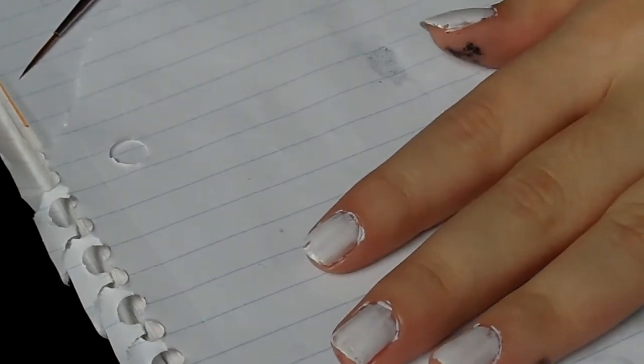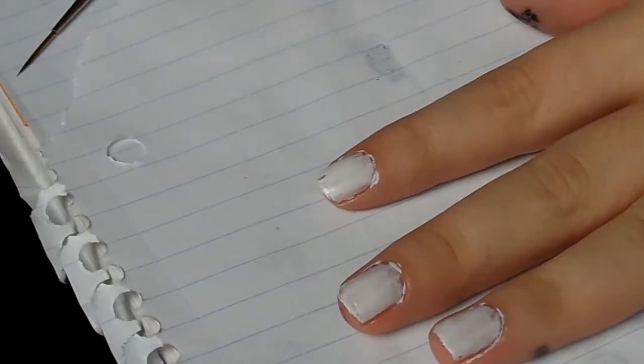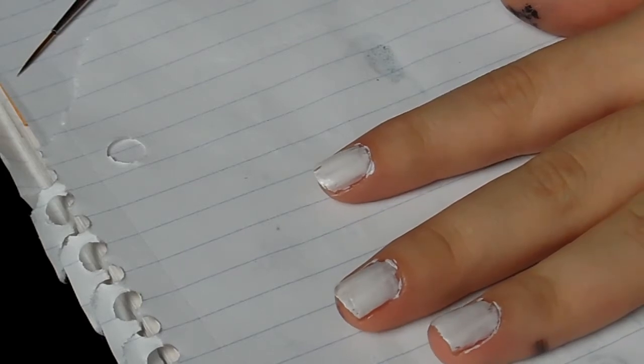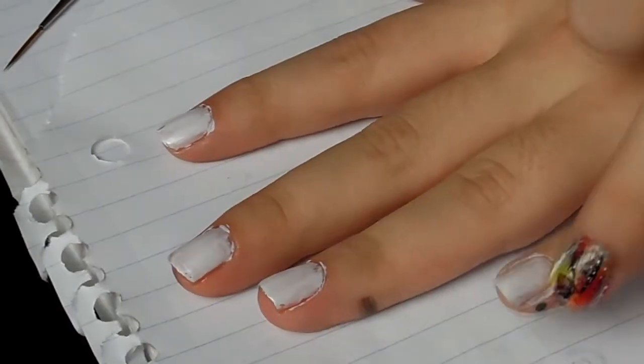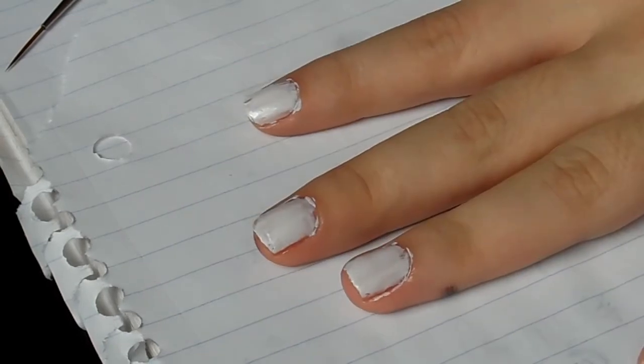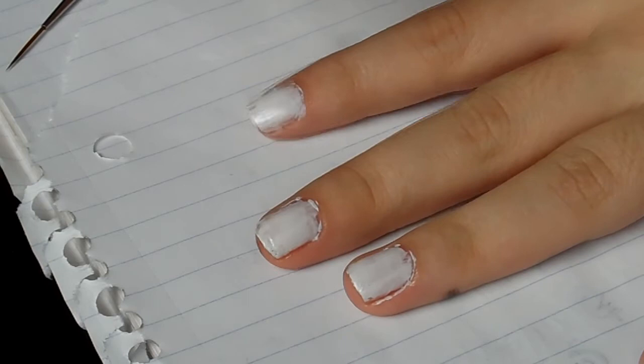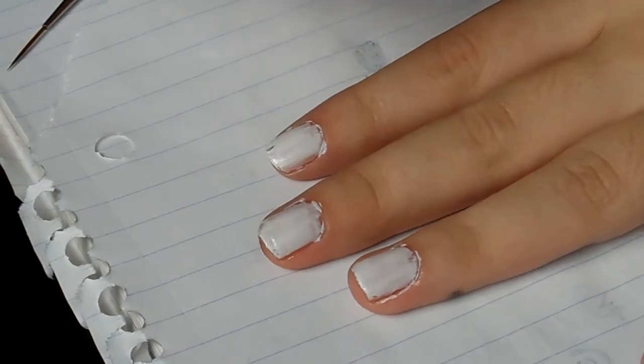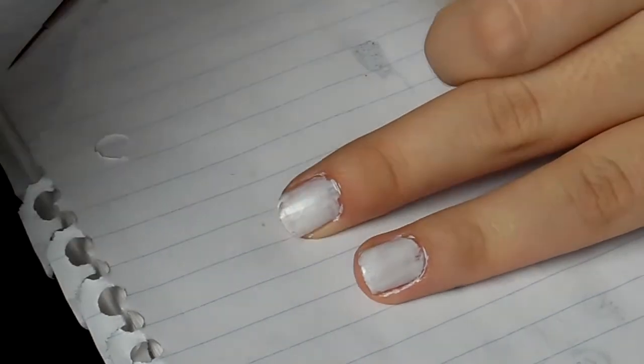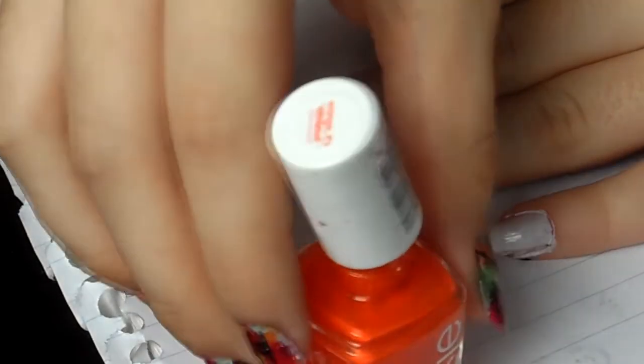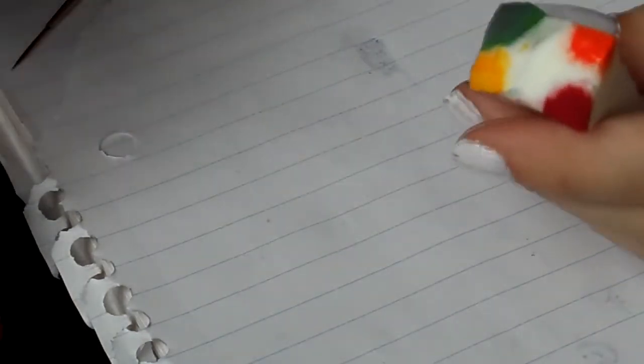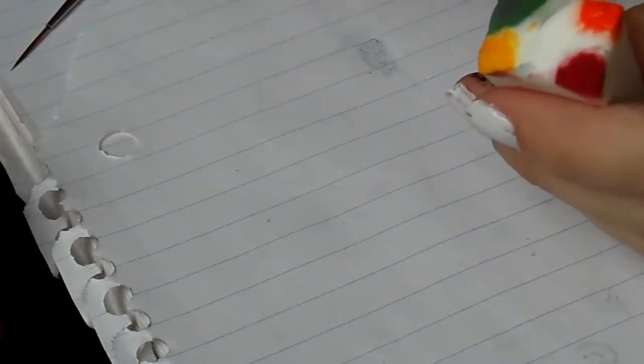Basically, we're just going to be sponging on color. I did get a little bit of white around my nails, but that's okay. I'm taking a cosmetic sponge and going into an orange color - this is Essie's Orange It's Obvious. I'm applying it to a little corner of the makeup sponge.